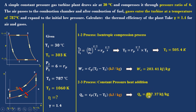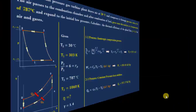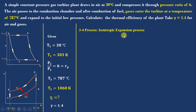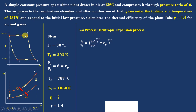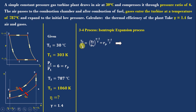Next is process 3-4: isentropic expansion. From the isentropic relation: T3/T4 = (P3/P4)^((gamma-1)/gamma). Since P2 = P3 and P1 = P4, we have P3/P4 = RP. Solving for T4: T4 = T3 / RP^((gamma-1)/gamma). T4 becomes 635.5 K.